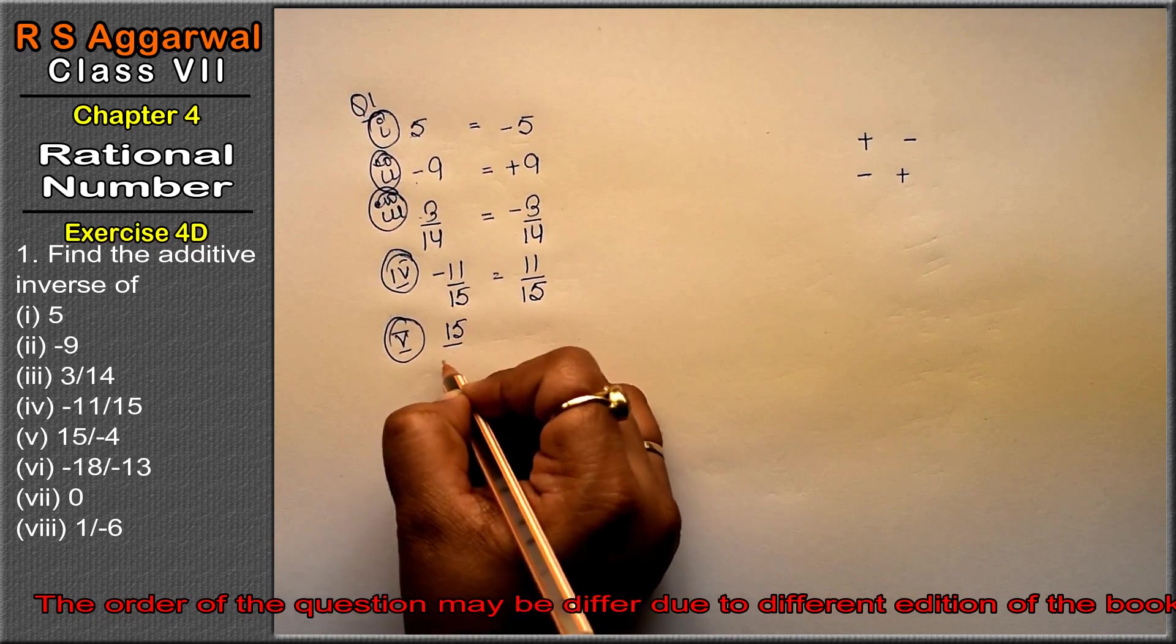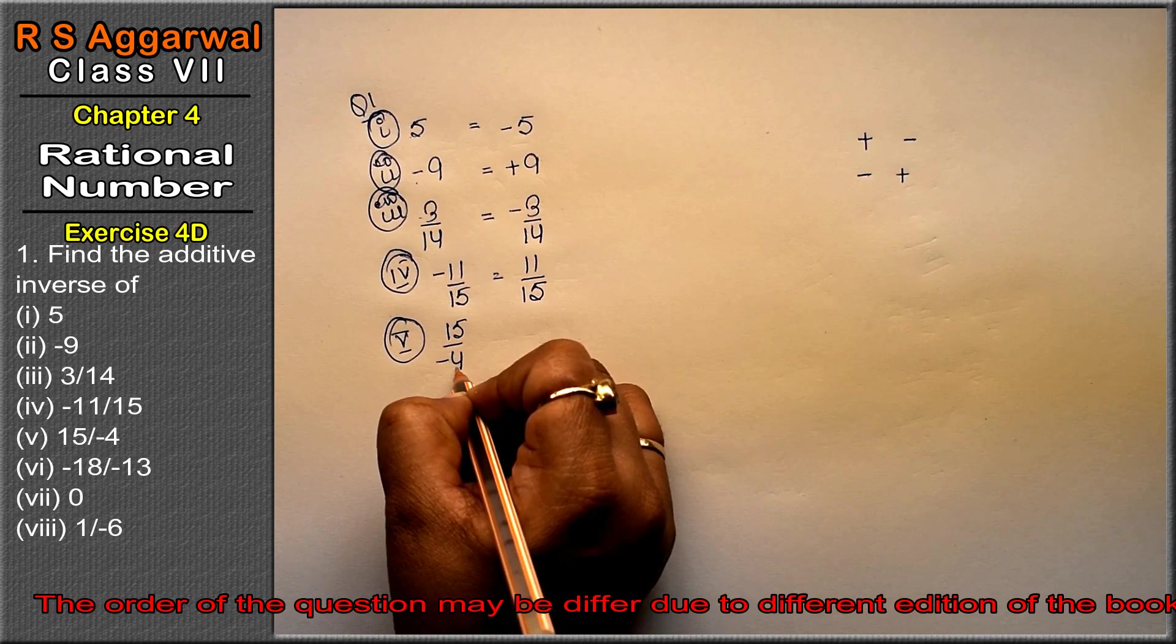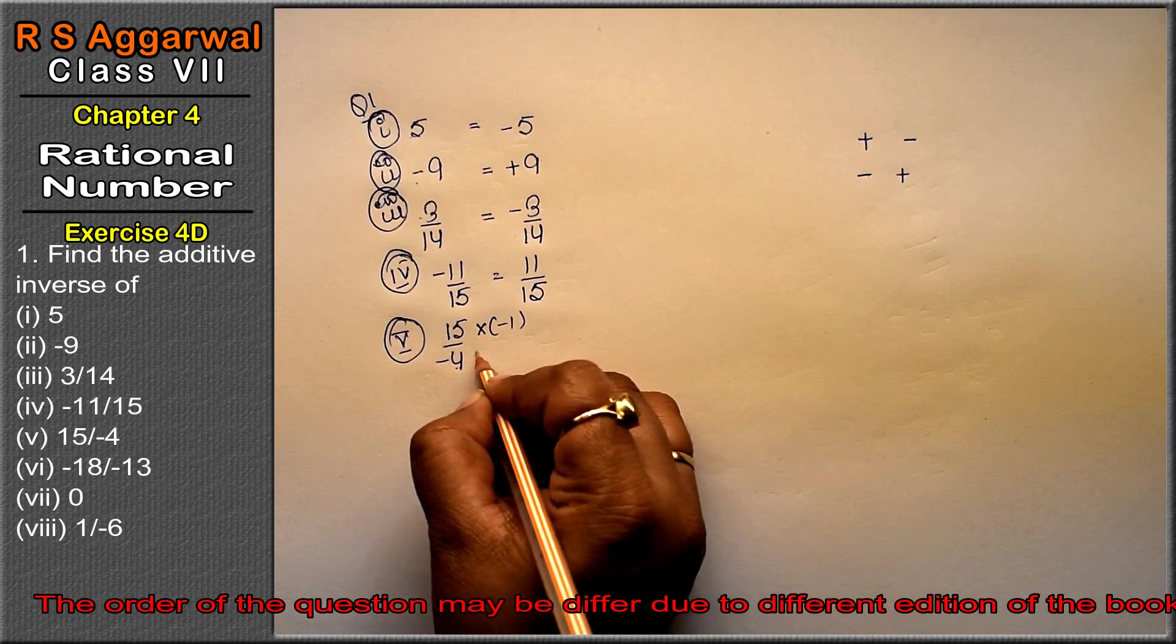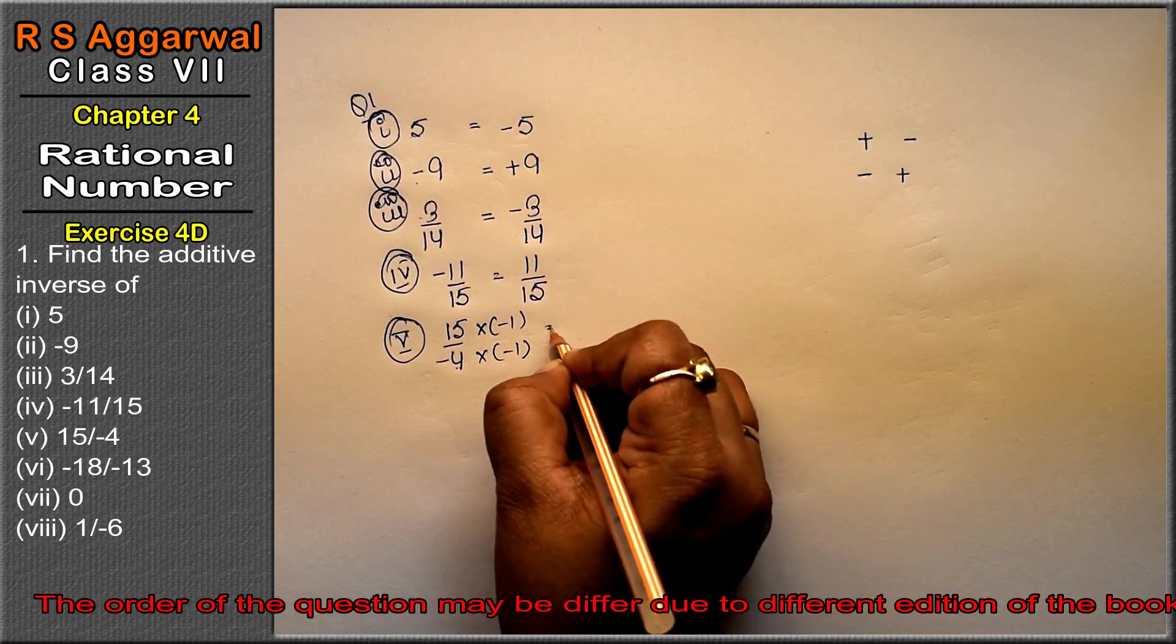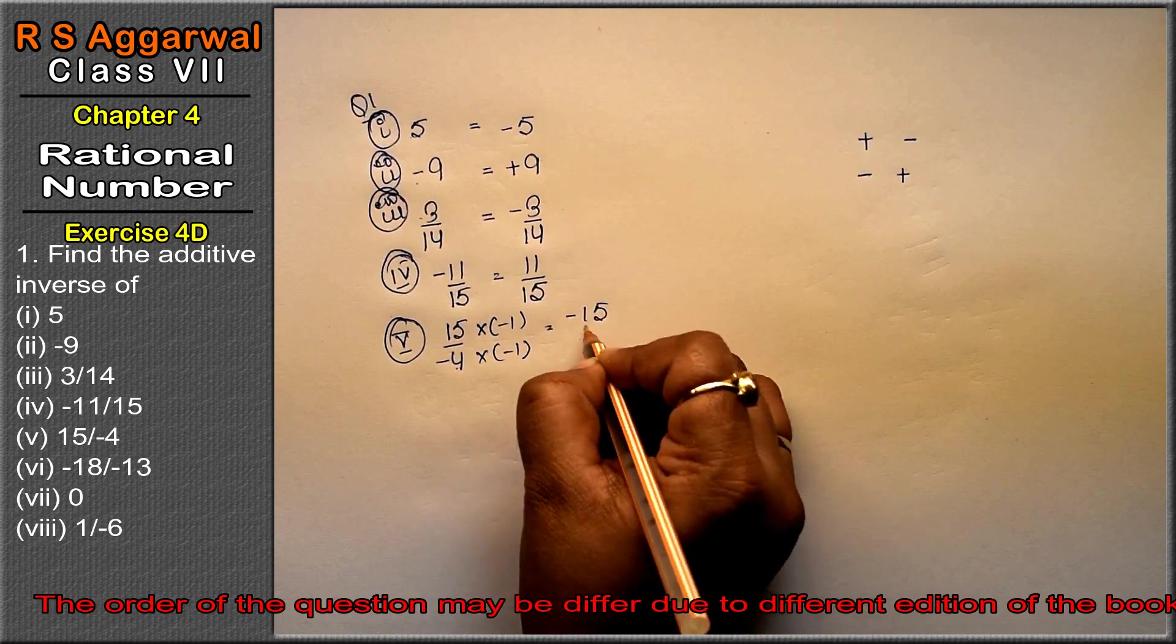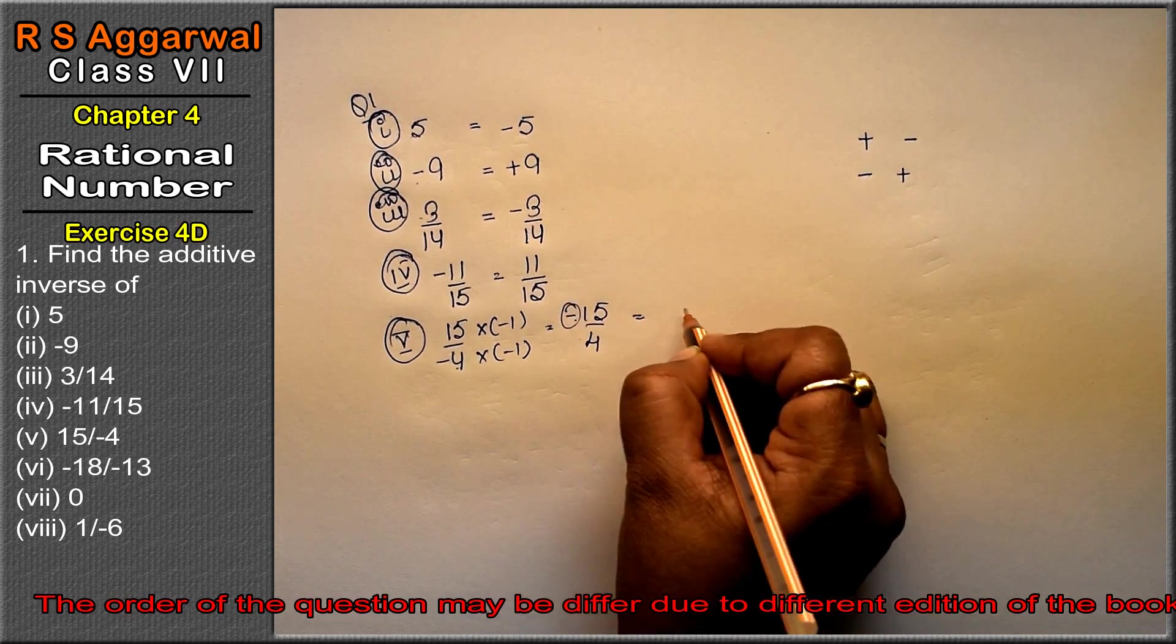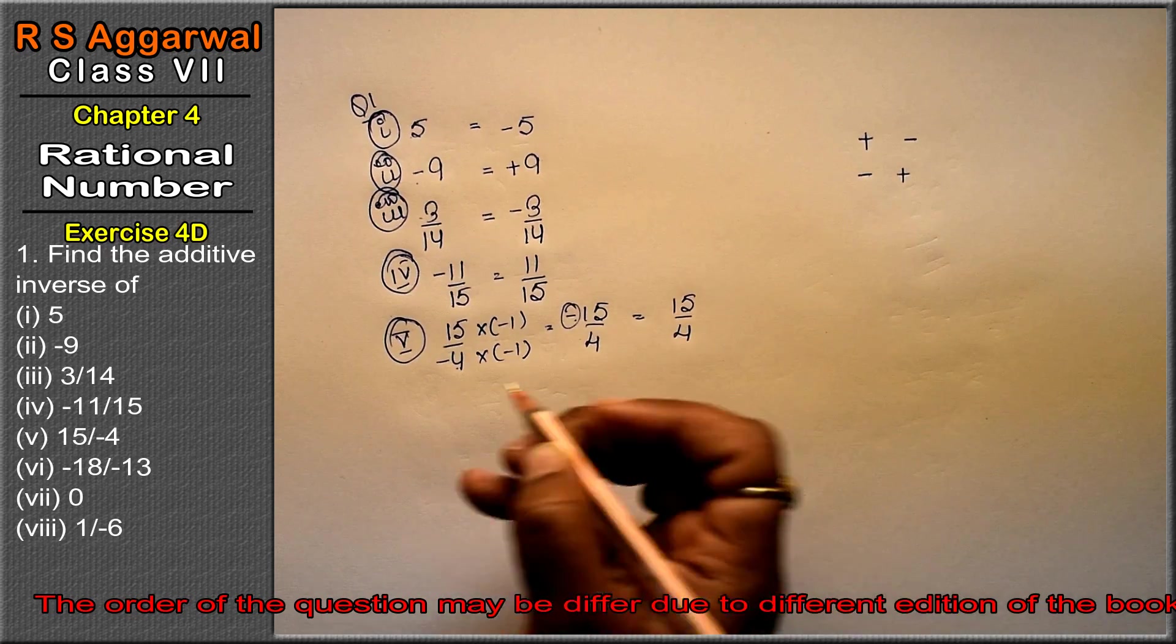Fifth part: 15 upon minus 4. Friends, the minus sign can be below or above, it's the same thing. You can multiply by minus 1 above and below to get minus 15 upon 4. Now we have the minus sign, so its additive inverse is 15 upon 4.